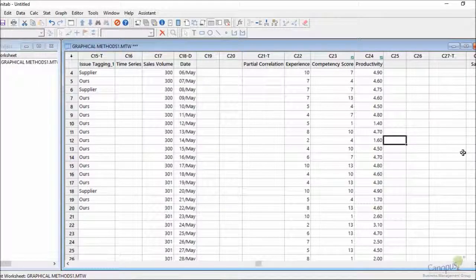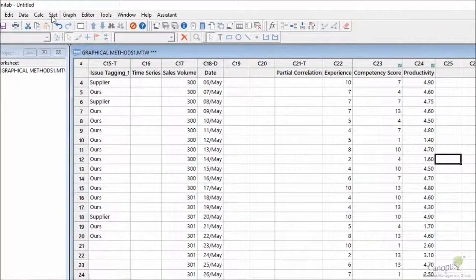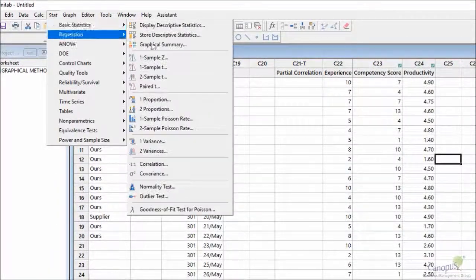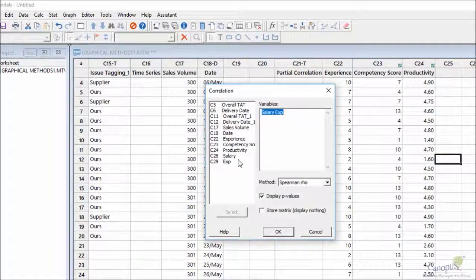I have data of experience, competency score, and productivity. I'm going to go to Stat, I'm going to Basic Statistics and Correlation. I'm going to click on all these three factors.